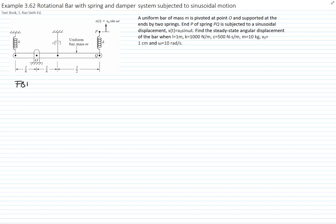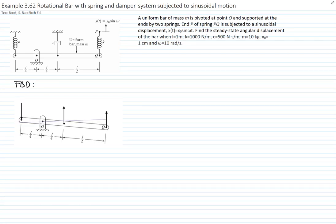Let's now do the free body diagram of the bar in a generic position when we have tilted the bar an angle theta. We have the force of the first spring Fk1, the force of the damper, and the force of the second spring. We also have the two reaction forces at the pivot, OX and OY, because the pivot takes two degrees of freedom and produces two reaction forces.